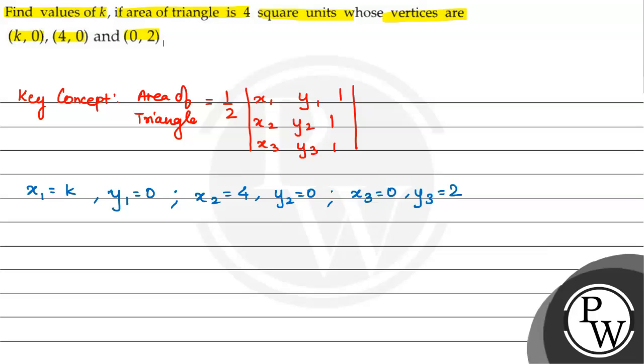Area is 4 square units. So 4 is equal to half multiplied by the determinant k, 0, 1, 4, 0, 1 and 0, 2, 1. These are my coordinates.